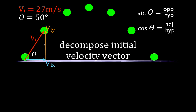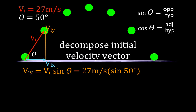We're going to do the opposite side first using our sine function. We know the hypotenuse and we know the angle, therefore the opposite side — which is the initial velocity in the y direction — is going to be equal to the initial velocity times the sine of the angle. That means it's 27 meters per second times the sine of 50, which gives us an initial velocity in the y direction of 20.7 meters per second.